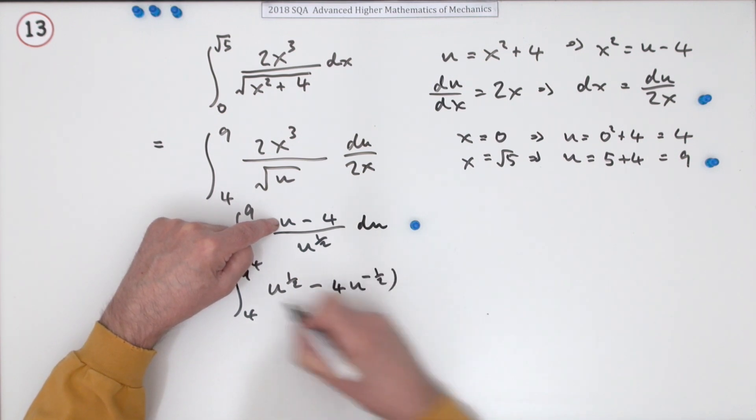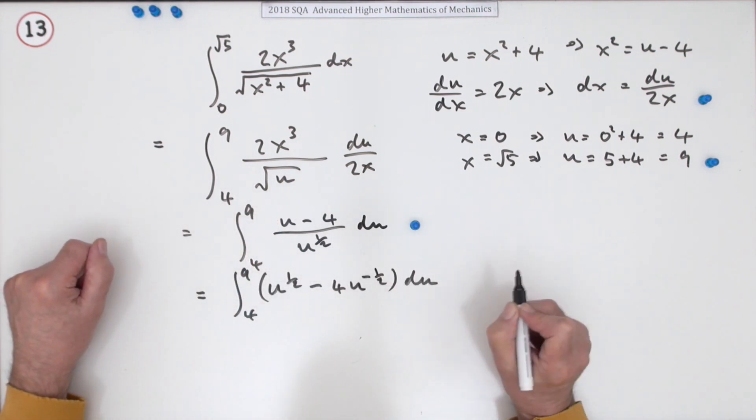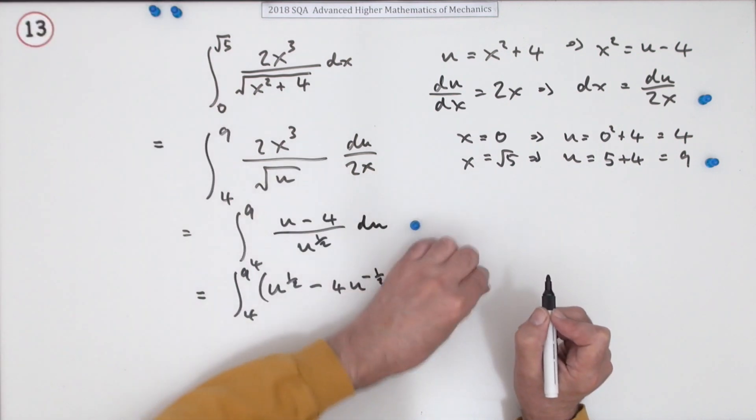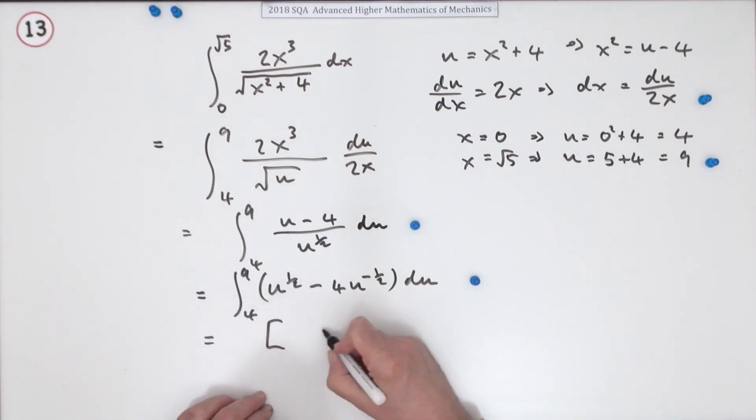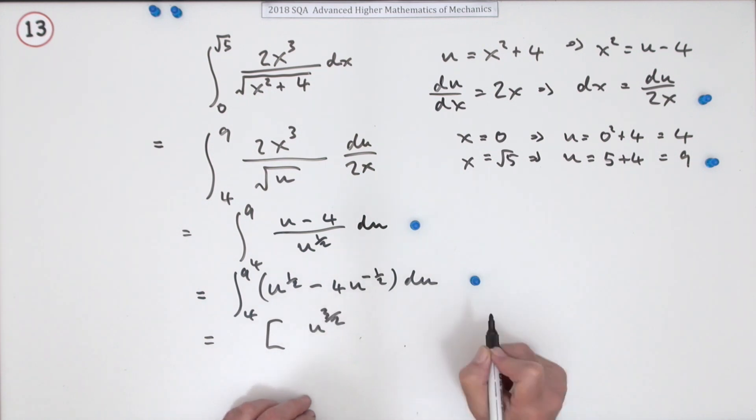Now carry out the integration. Add one to the power and divide by the power: (2/3)u^(3/2) minus 8u^(1/2). Evaluate from 4 to 9—that's worth a mark.